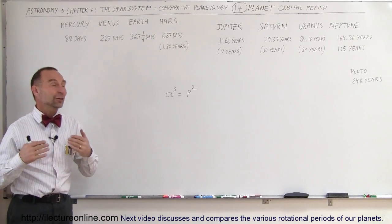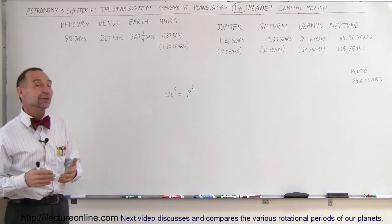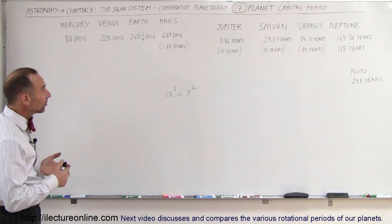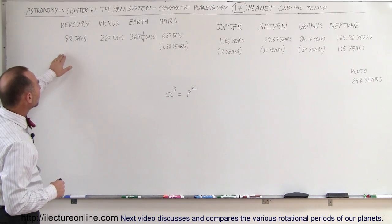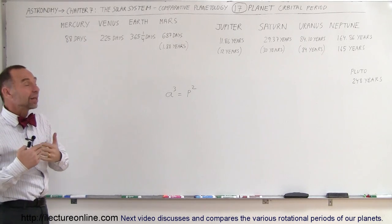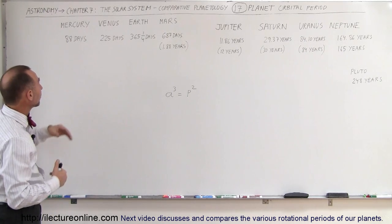Welcome to Electron Line, and now let's take a look at the planet orbital periods. Now we have eight planets, we'll also take a look at Pluto, but notice that for the inner planets, since they're so close to the sun, it doesn't take them all that long to travel, to make one trip around the sun.